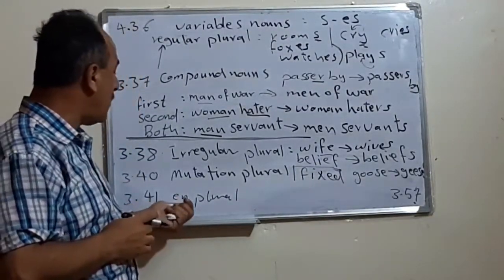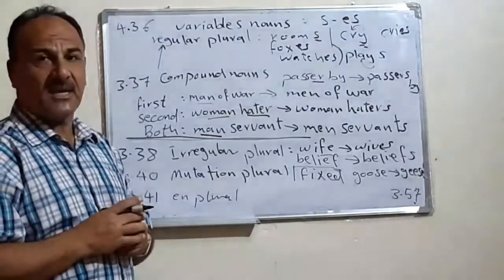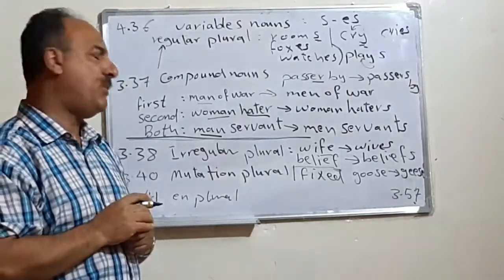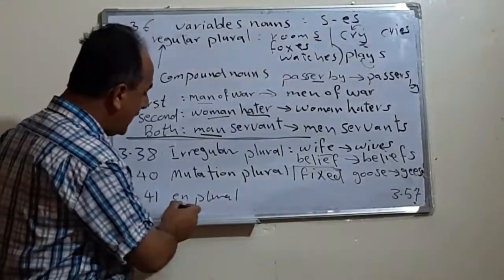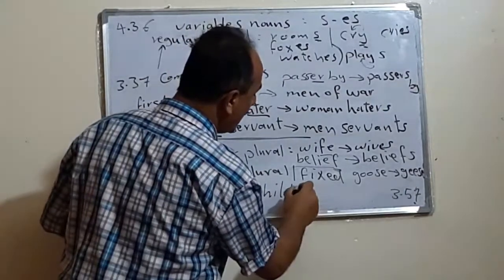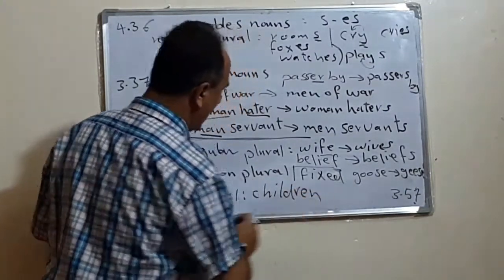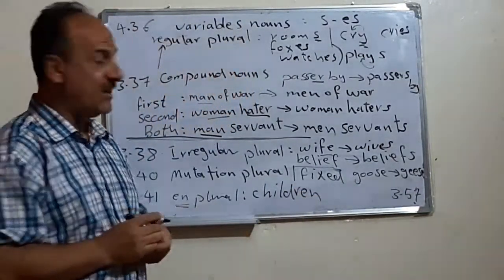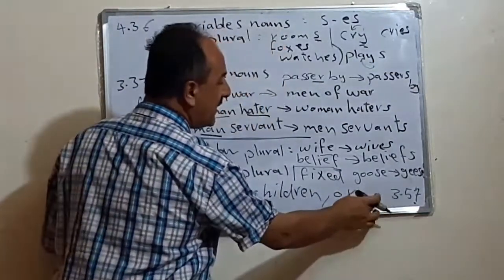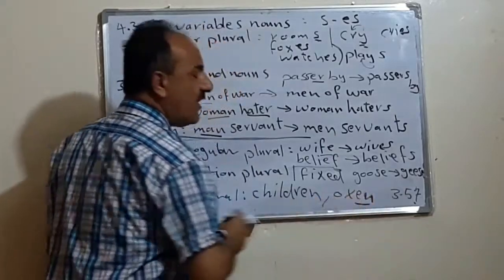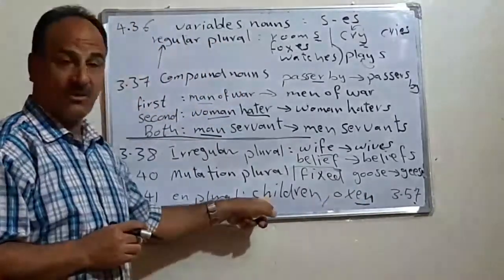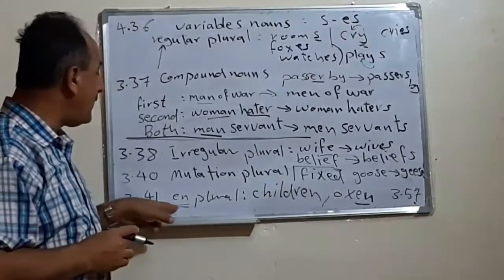Finally, we have what we call EN plural. Certain words, when we change them from singular into plural, we add just EN. For example, the word child, we say children. Or ox, we say oxen. Or brother, it is possible to say brethren, means not only brothers. We call them EN plurals.